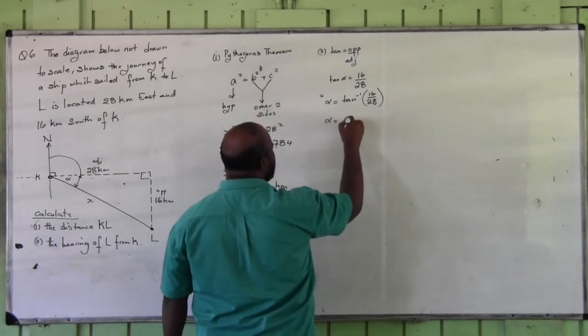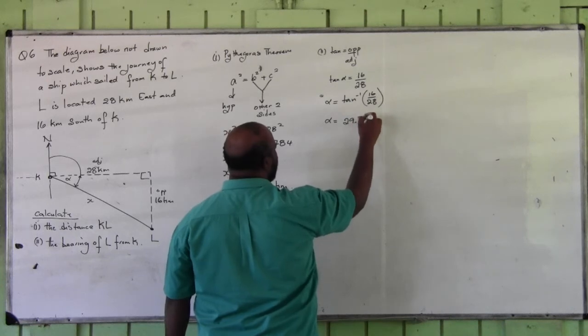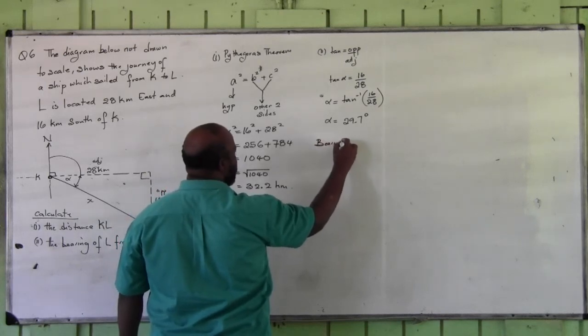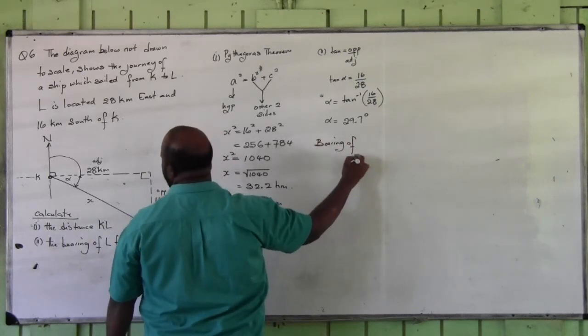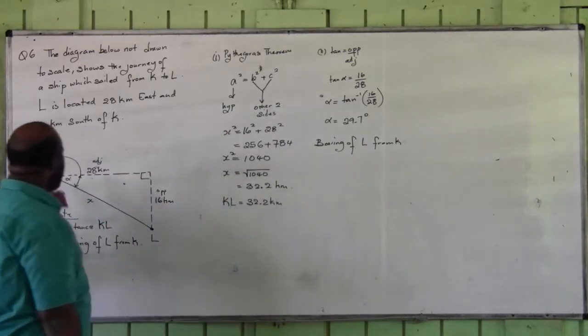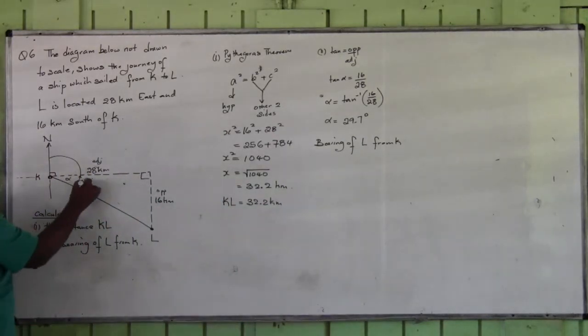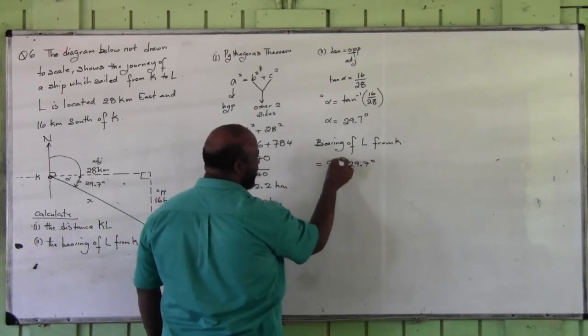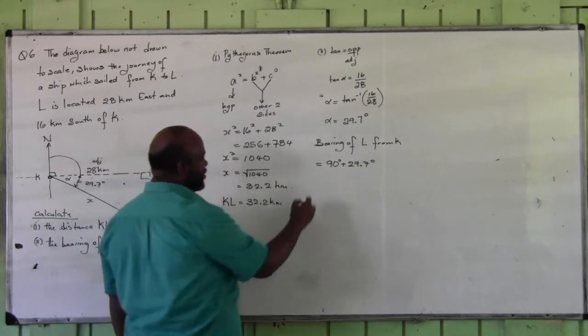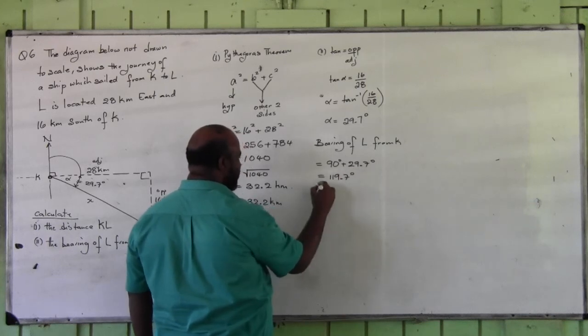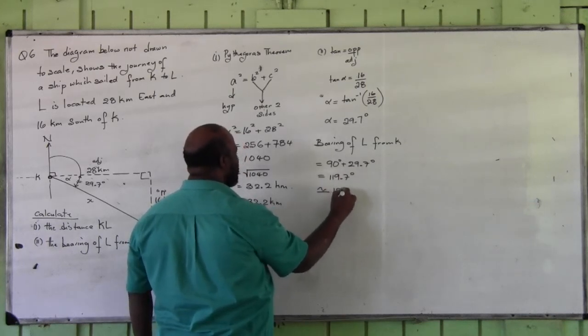So let's just say 29.7 degrees. So lastly, now the bearing of L from K. This is the entire angle. This angle is 29.7 degrees. The bearing is 90 plus 29.7 degrees. This is 119.7 degrees. The bearing is approximately 120 degrees.